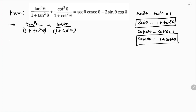Using these identities, tan³θ by (1 + tan²θ) becomes tan³θ by sec²θ, plus cot³θ by (1 + cot²θ) becomes cot³θ by cosec²θ.